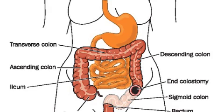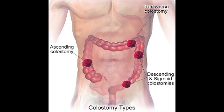A colostomy is constructed using the large intestines, also known as a large bowel. A portion of the large intestine is surgically cut and brought to the abdominal surface through a surgically constructed opening. There, the large intestine is sutured to the abdomen creating a stoma. The contents from the colostomy will flow through this newly constructed stoma.